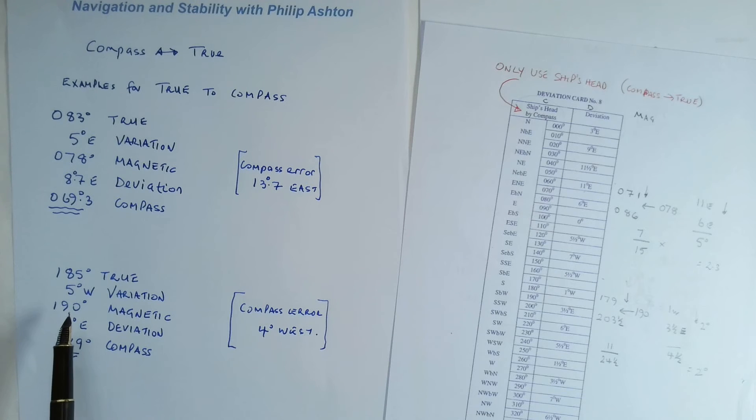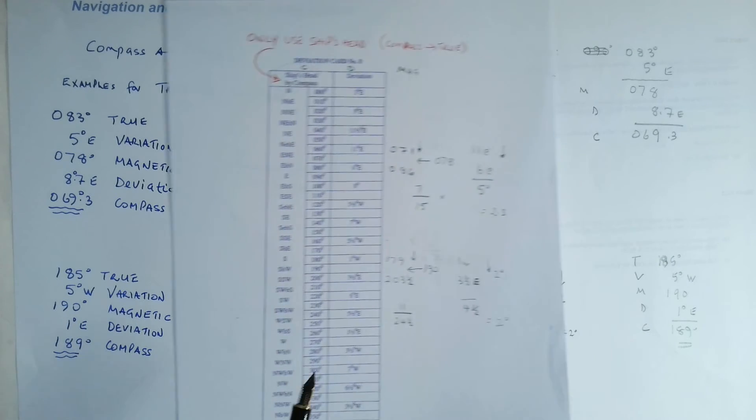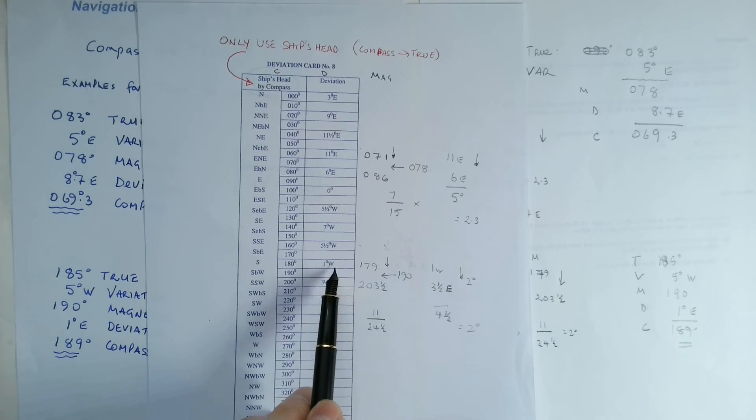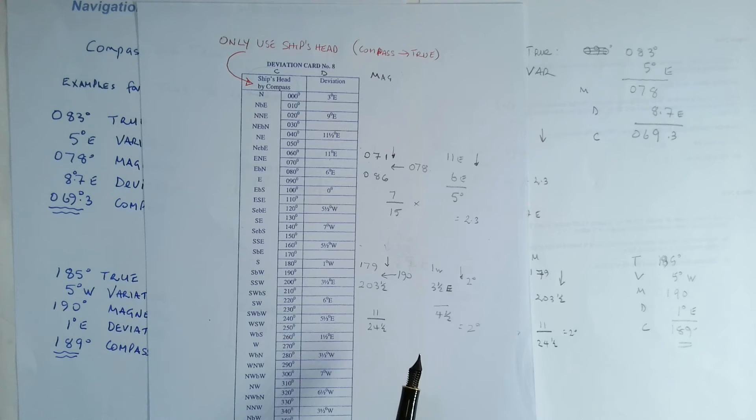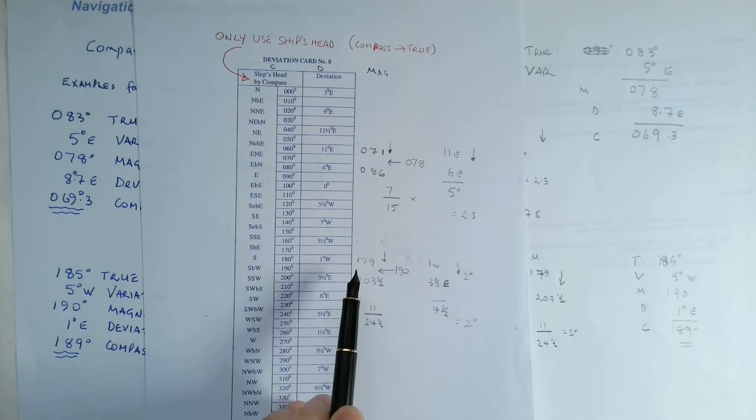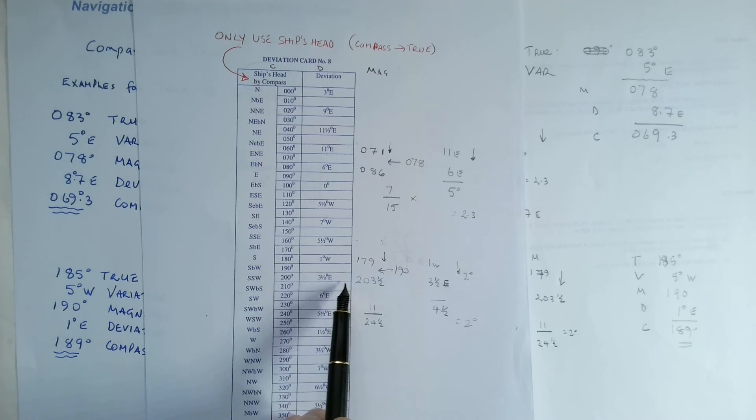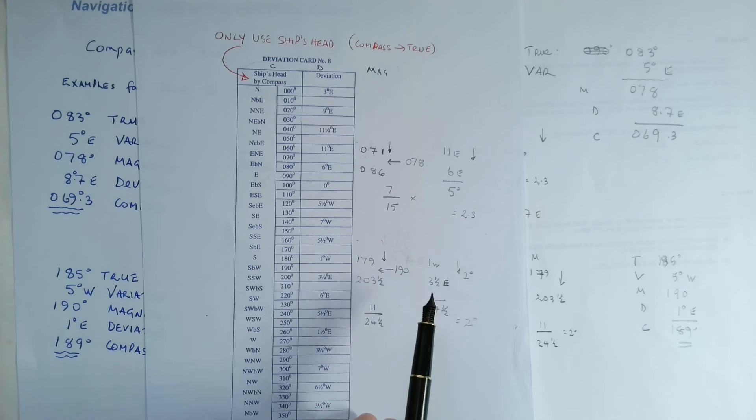So now error west, compass is best, so it becomes 190. Again, we need to find two values that fall either side of the 190. So we've got 179, 3.5 east applied there, 1 west.